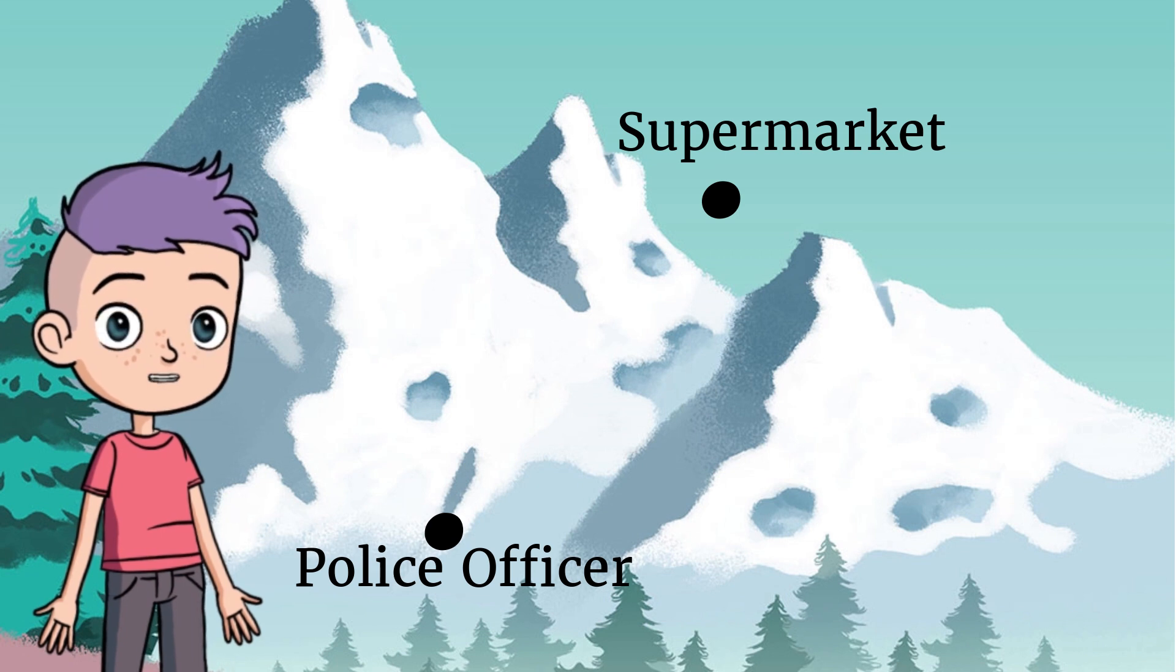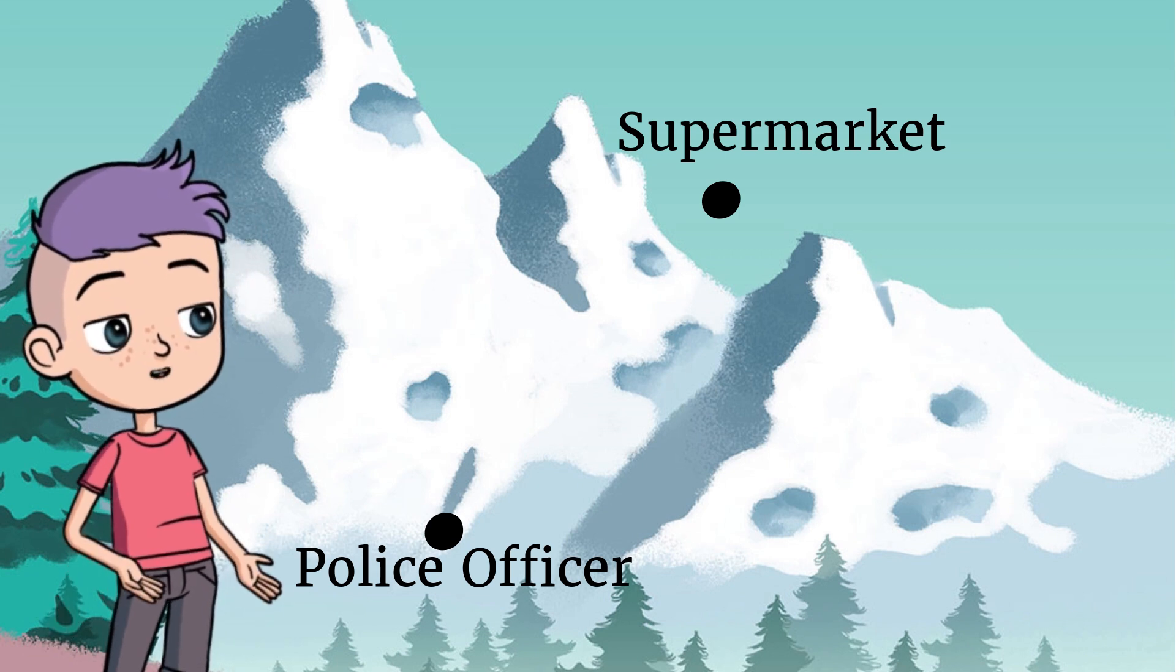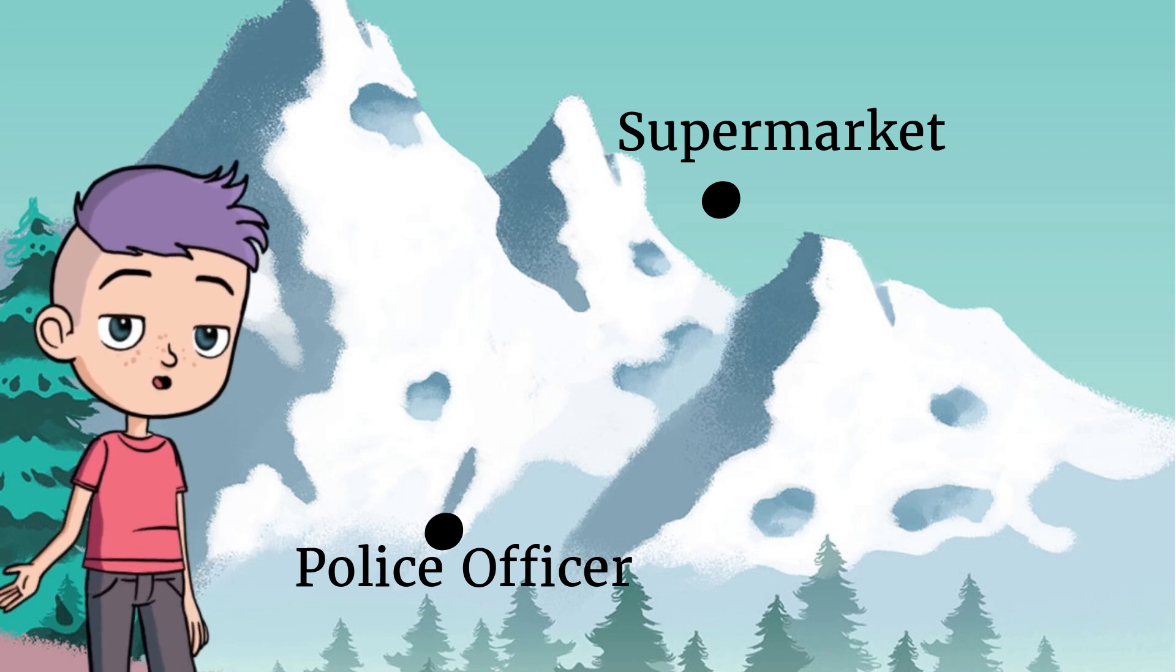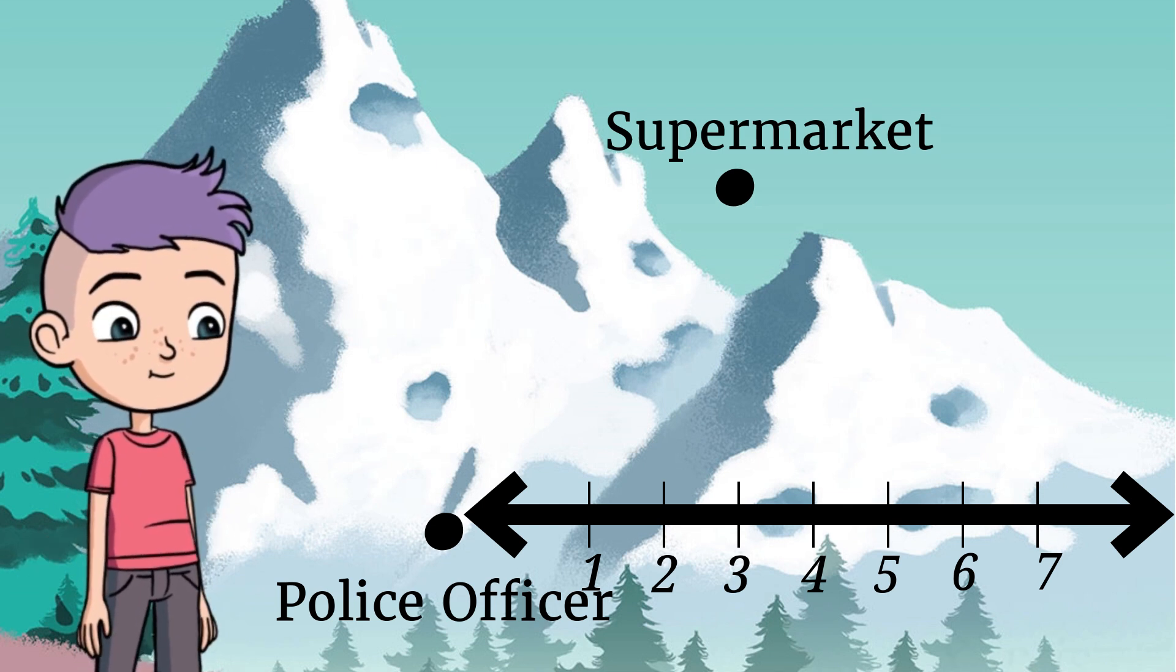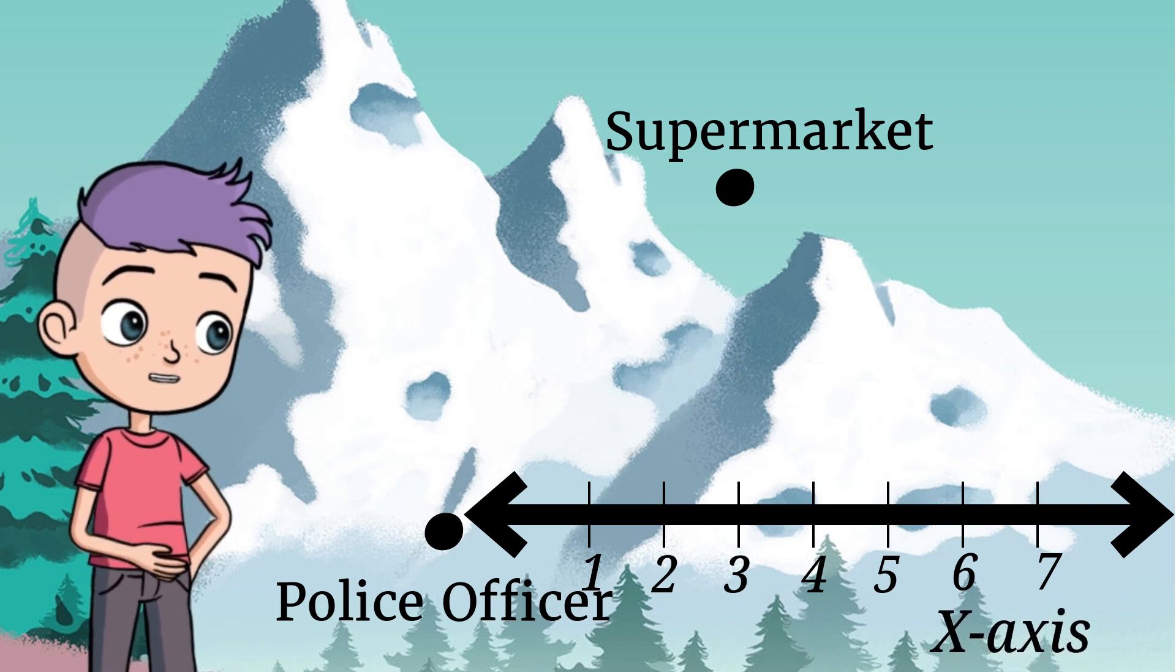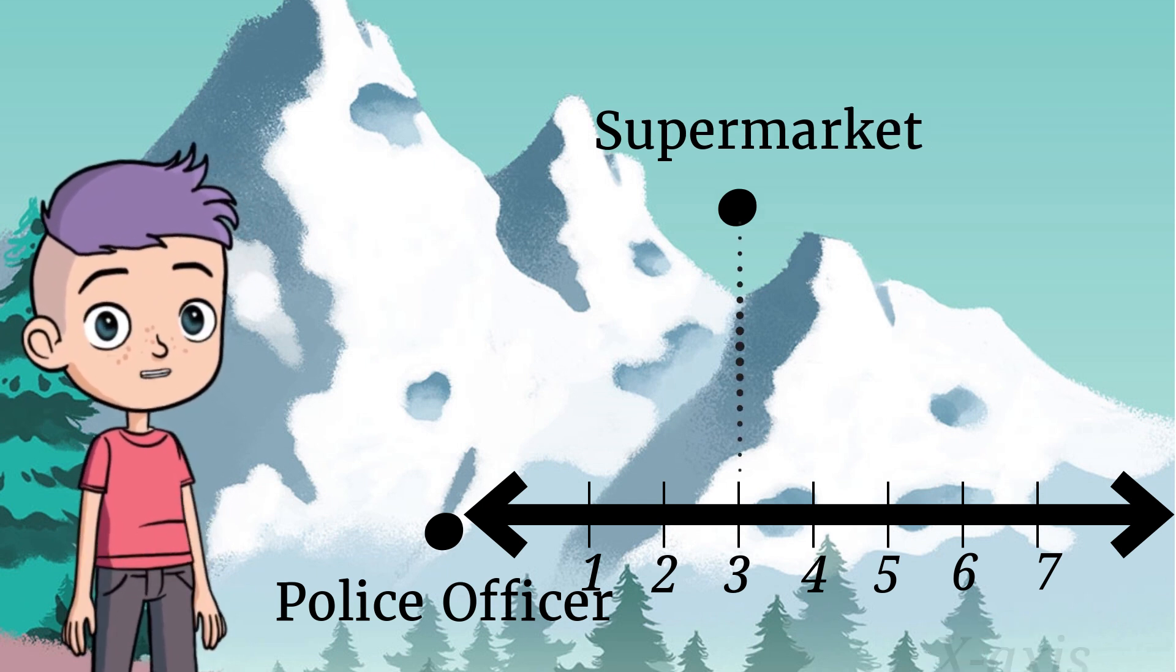Let's find the location of the supermarket in relation to the police officer. We are already familiar with the horizontal number line. This is our x-axis. This horizontal number line will tell us the horizontal distance of the supermarket.